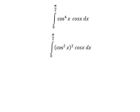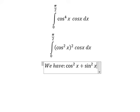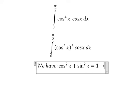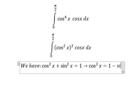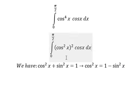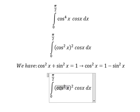So we know that cosine x squared plus sine x squared equals one. So we put sine x squared to the right and we have one minus sine x squared. Then we substitute this in here.